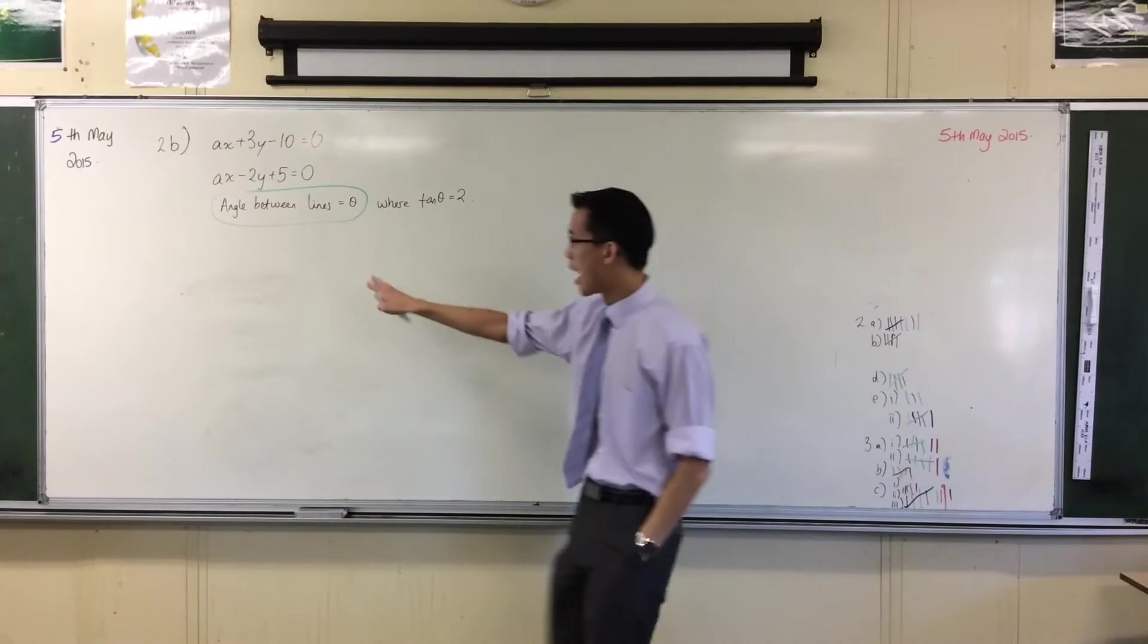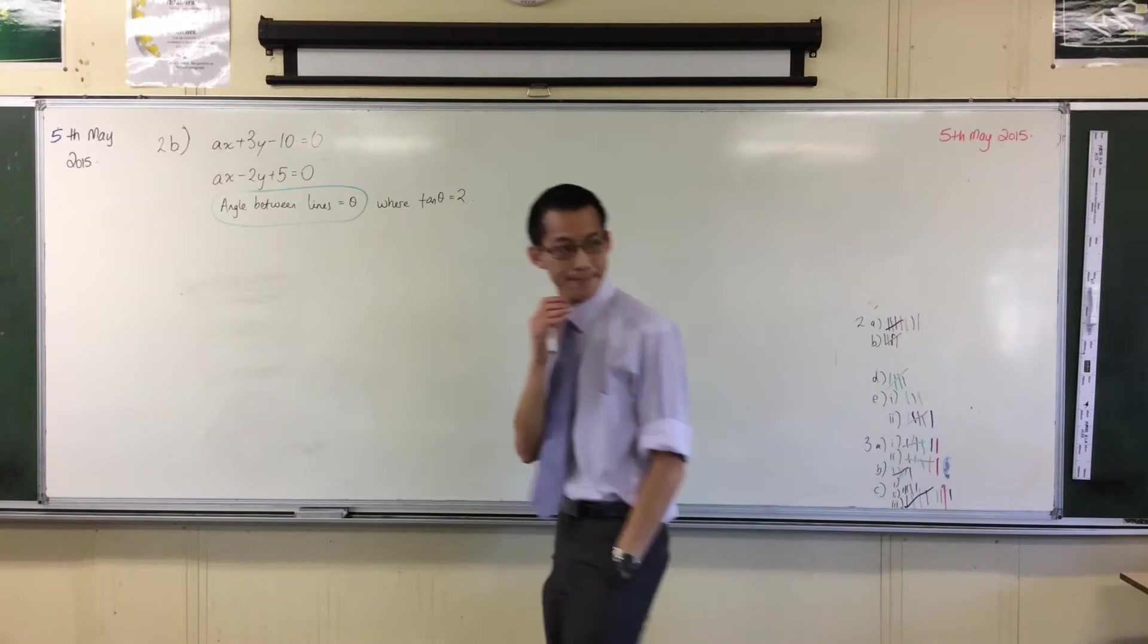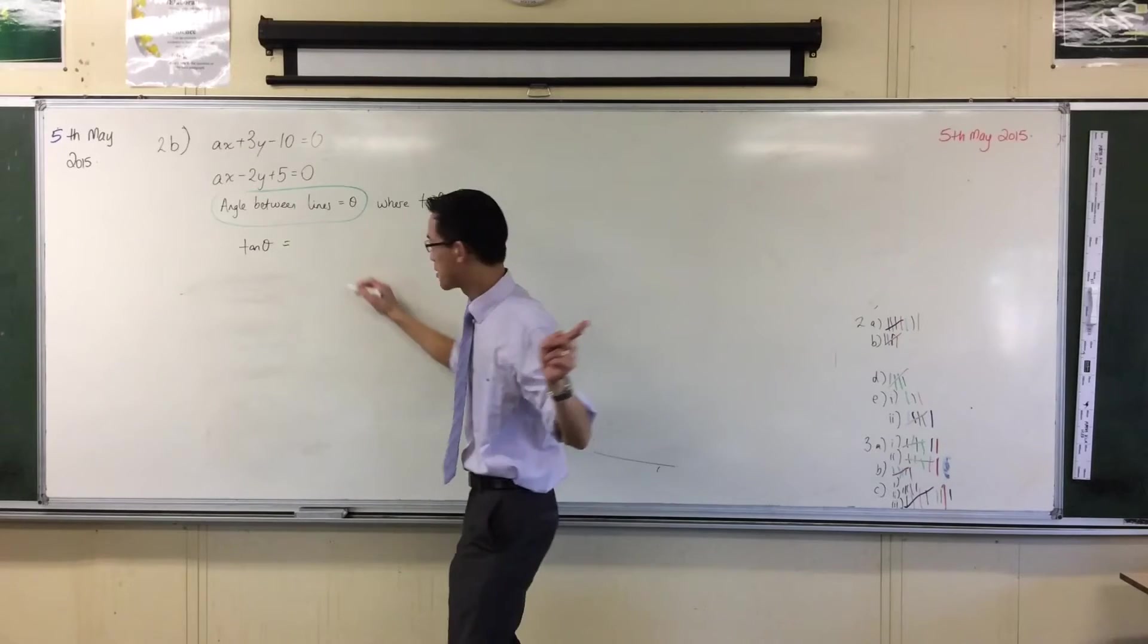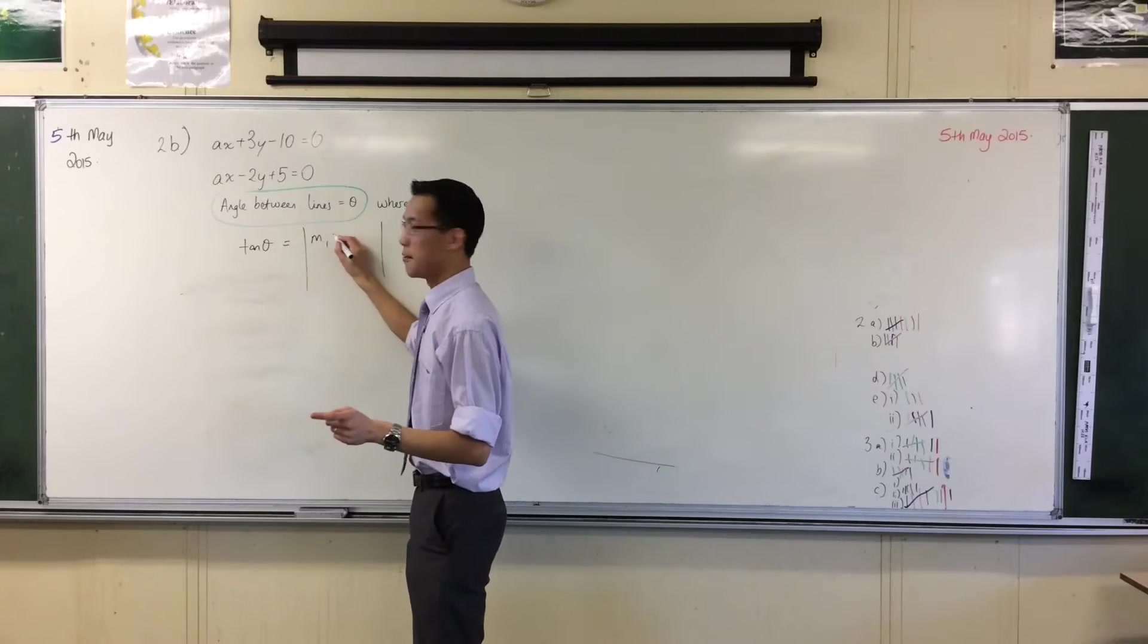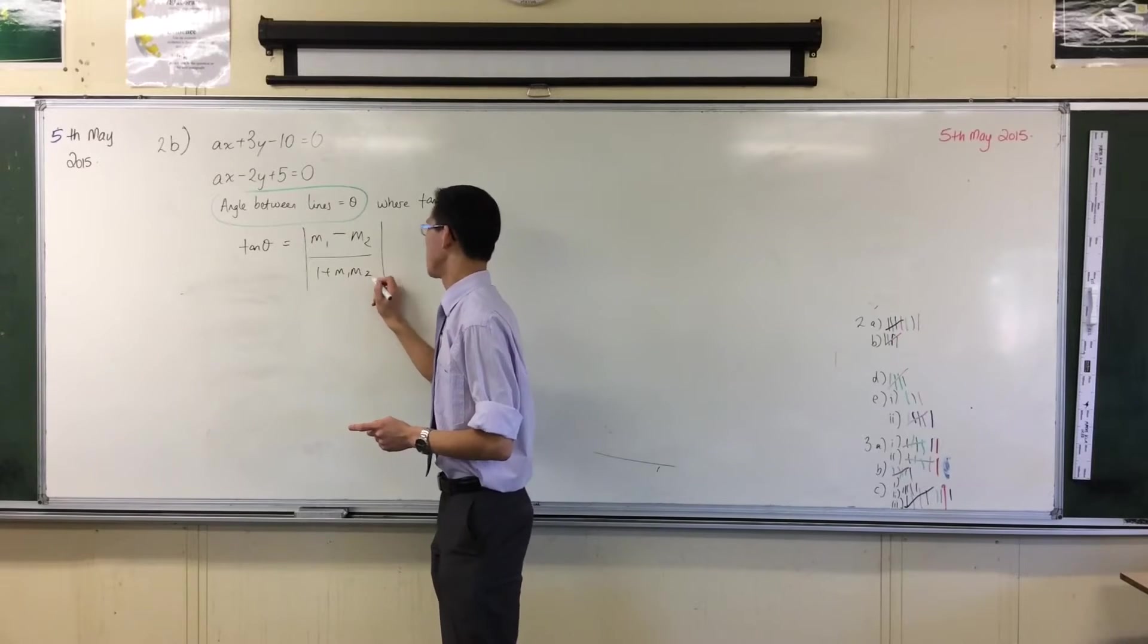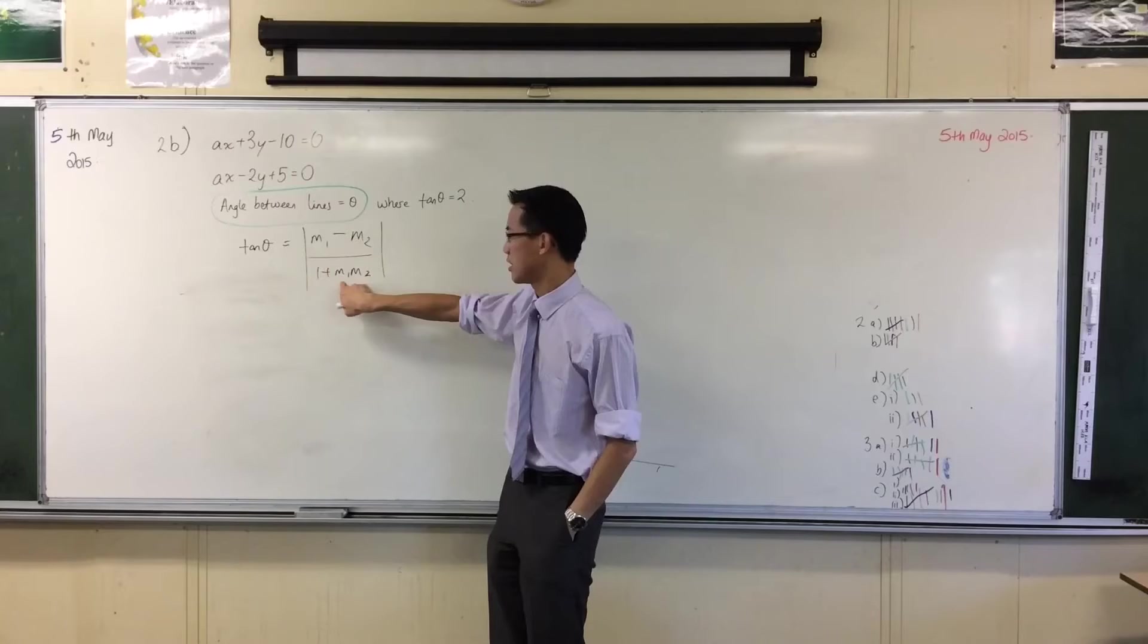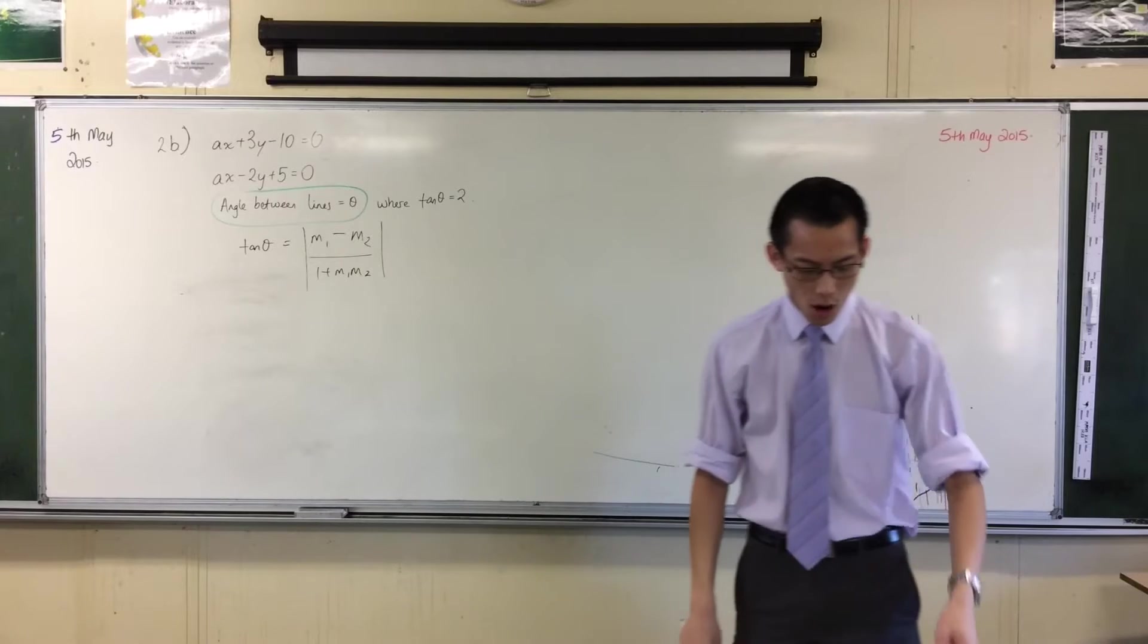When I highlight this in green, what's the formula, what's the result that we're going to take advantage of? Tan theta where theta is the angle between the lines - what's it equal to? Absolute value of m1 minus m2 over 1 plus m1m2. Does that make sense? Based on the fact that it's absolute value, these two here, it doesn't matter what order you put them in, you just want to make it convenient to you.